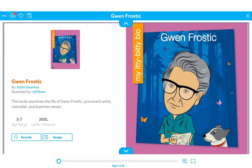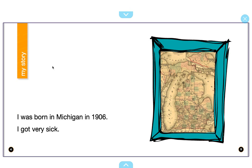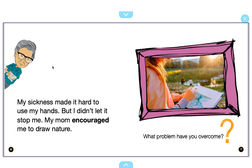She was a prominent artist, a naturalist, and business owner. My story: I was born in Michigan in 1906. I got very sick. My sickness made it hard to use my hands, but I didn't let it stop me. My mom encouraged me to draw nature. So her sickness made it really hard for her to use her hands; however, she loved to draw and her mom encouraged her to draw nature.